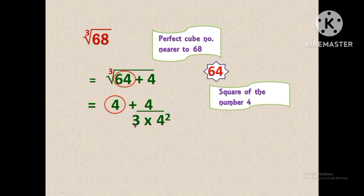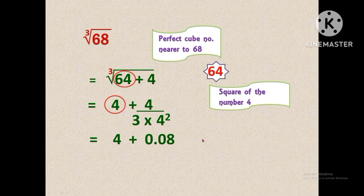While doing the calculation, in the denominator 3 into 4 squared equals 48. So we have 4 plus 4 divided by 48. If we do 4 divided by 48, we get 0.08. So 4 plus 0.08 is equal to 4.08.